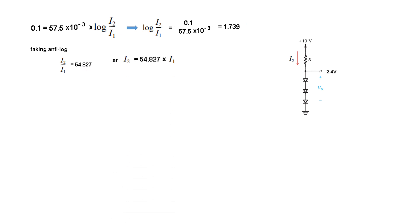From here, I2 is 54.827 into I1. I1 we know is 1 milliampere. So I2 will be 54.827 milliampere. Now here, we know this voltage. We know the other voltage. So voltage across R will be 10 minus 2.4. We know the current. Therefore we can find the resistance.